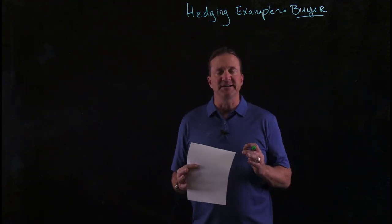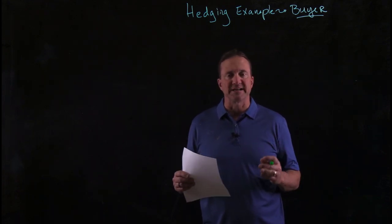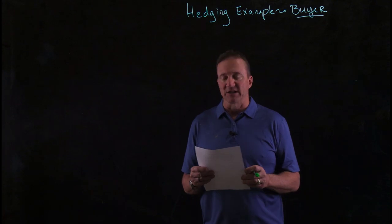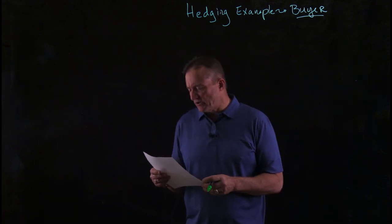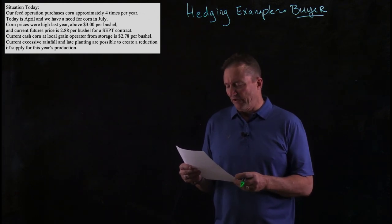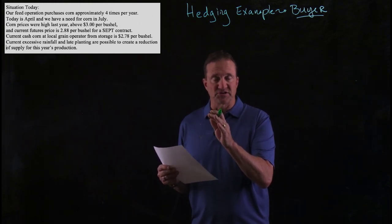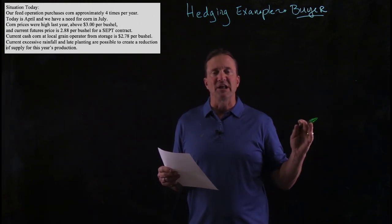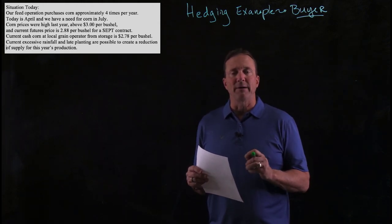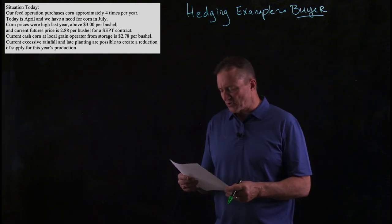Welcome to my video on a hedging example for a buyer. What I want to do is work through a problem and show you exactly how you would address something that you may get given on a test. You are a buyer of corn. Today is April, and you need to buy corn in July. Your problem is from April to July, you don't know what the price is going to do. Buyers are worried about prices going up, so we want to look at this from a buyer's perspective.